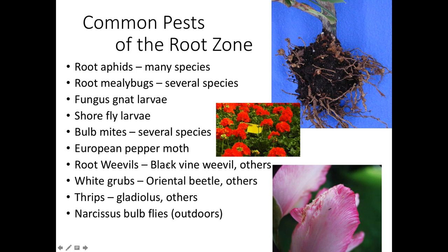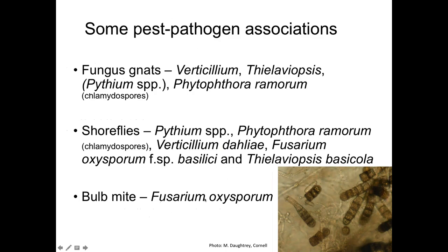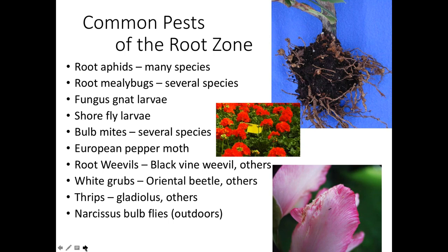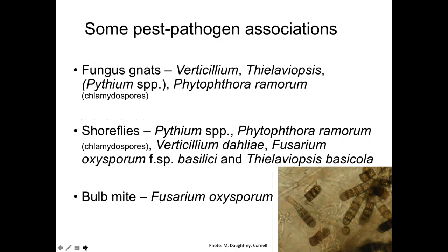Black vine weevil has been the main root weevil we've seen, although in recent years it seems to have all but disappeared. White grubs — oriental beetle is the number one problem we deal with on ornamental plants outdoors; it's also a turf grass pest spreading in the northeast and found in northern Ohio and elsewhere. Gladiolus thrips will overwinter in corms in storage, and narcissus bulb fly is an occasional pest I get inquiries about in landscapes.